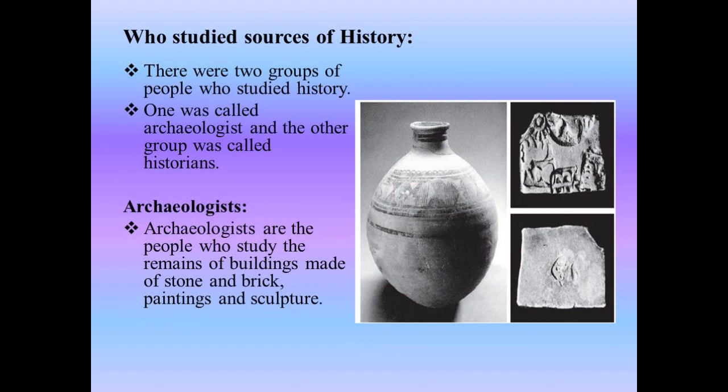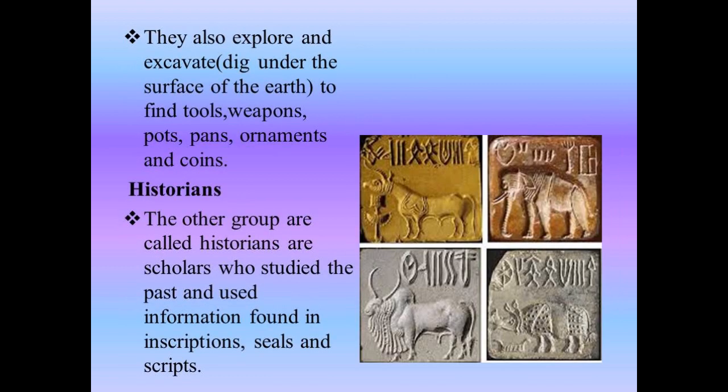Who studied sources of history? There were two groups of people who studied history: archaeologists and historians. Archaeologists study the remains of buildings made of stone and bricks, paintings and sculpture. They also excavate — digging under the surface of the earth to find tools, weapons, pots, pans, ornaments and coins. Historians are scholars who studied the past and used information found in inscriptions, seals and scripts.